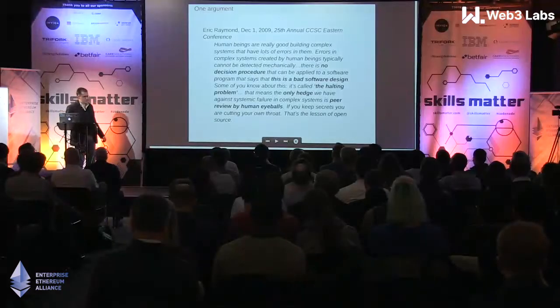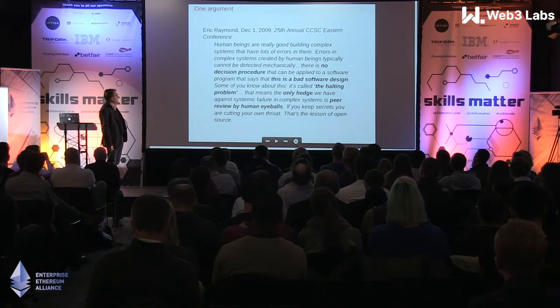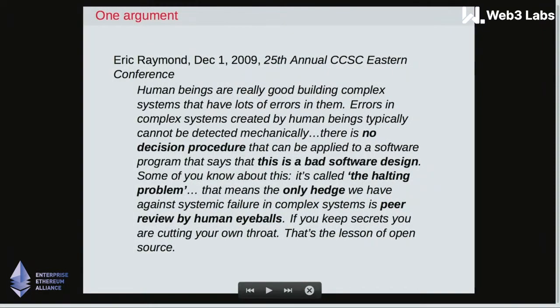So why does open source software matter? I really like this quote from Eric Raymond: human beings are really good at building complex systems that have lots of errors in them. Errors in complex systems typically cannot be detected mechanically — there is no decision procedure that can be applied to a software program that says 'this is a bad software design.' Some of you know about this — it's called the halting problem. That means the only hedge we have against systemic failure in complex systems is peer review by human eyeballs. If you keep secrets, you are cutting your own throat. That is the lesson of open source.